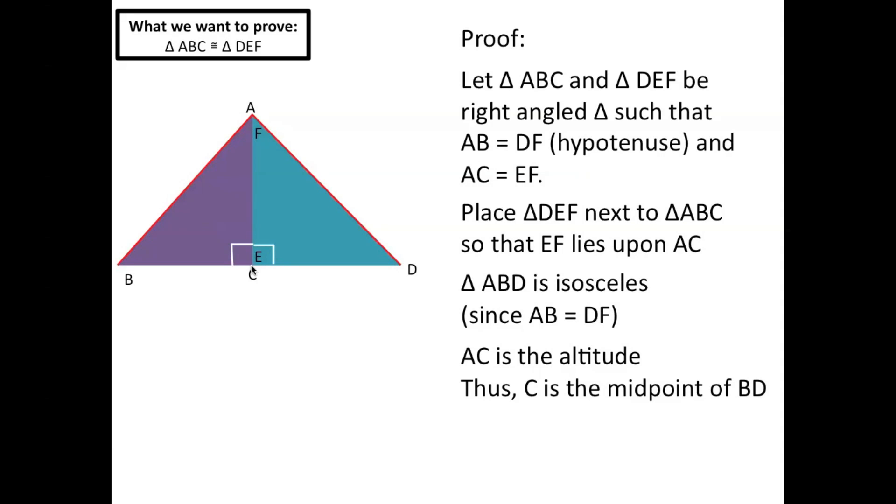So since this is an isosceles triangle and we know that it's the altitude and the median, and C is the midpoint, then that makes this line BC equal to the length of this line DC.